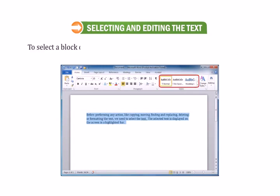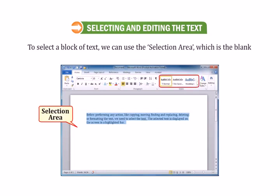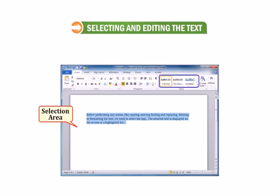To select a block of text, we can use the selection area, which is the blank area in the left margin of the document. We can select the text in a variety of ways.